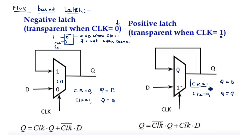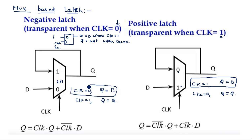When clock equals one, input equals output; when clock equals zero, output holds the previous value. This is why it is called a transparent device — output equals input with a control input. This is the fundamental latch operation observed with the multiplexer.